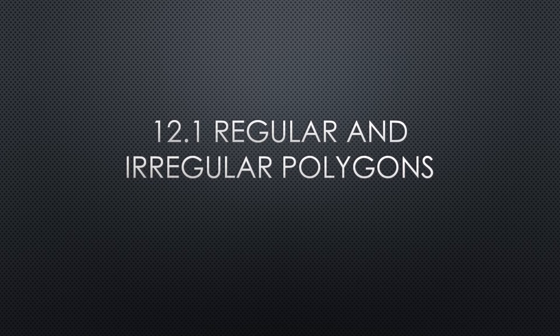Welcome back to Mr. B's math class. Today we're going to look at 12.1 regular and irregular polygons. With this lesson, a big chunk of it is a review from grade 7, as you did look at tessellations in grade 7. So it'll be a nice refresher to take a look at some things from last year. Let's begin.